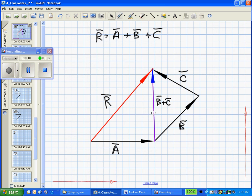And so we can take away the vectors B and the vectors C, and we can see that the vector R still consists of the vector A plus B plus C.